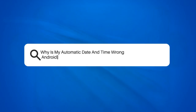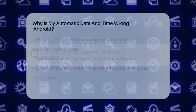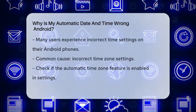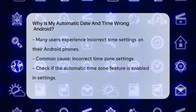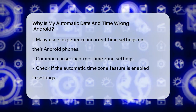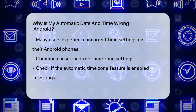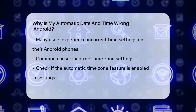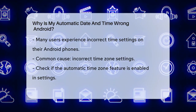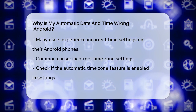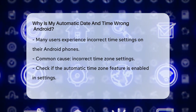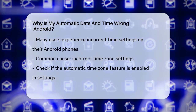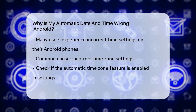Why is my automatic date and time wrong on Android? Have you ever found yourself wondering why your Android phone's clock is showing the wrong time, even though you're sure you set it correctly? This can be really frustrating, especially if you rely on your phone to keep you on schedule.